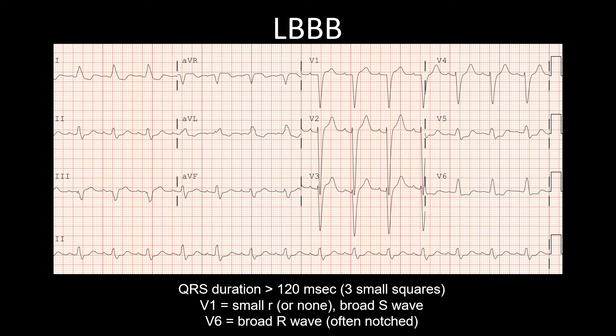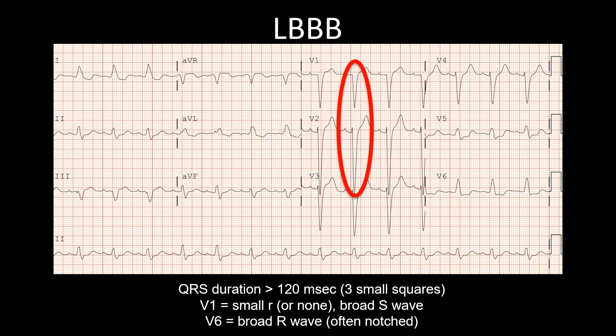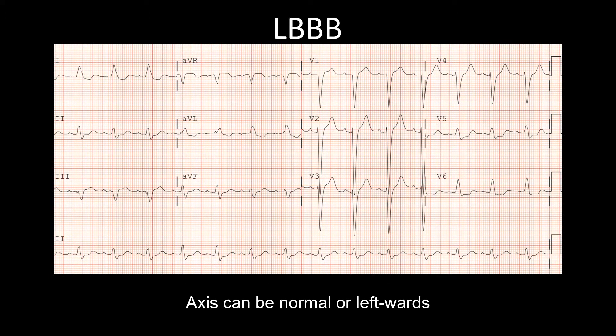Here's an example of an ECG with a left bundle branch block. Because of delayed left ventricular depolarization, the QRS complex is widened with a duration of more than 120 milliseconds, so more than three small squares. V1 might show a small R or none. If the R exists, it's very small and less than 20 milliseconds in duration, so less than half a small square, but a broad deep S wave. And V6 shows a broad R wave, and often this is notched. In this case, you see the notching in lead V5. Of note, the axis can be either normal — positive in leads I and II — or it can be leftwards, so positive in lead I and negative in lead II.